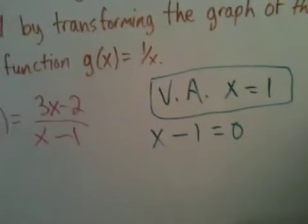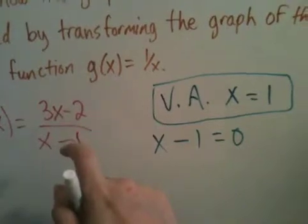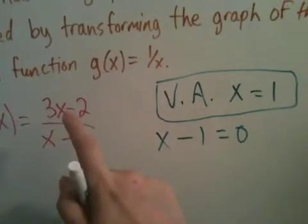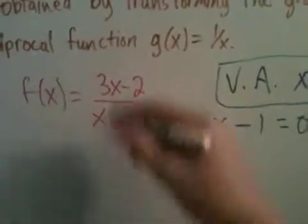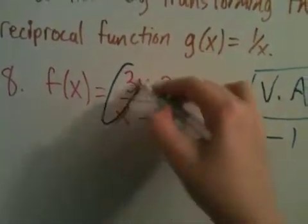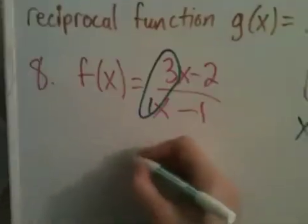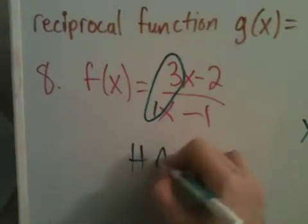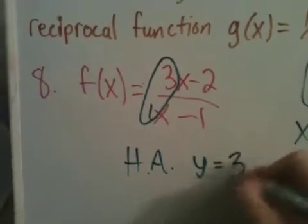My horizontal asymptote has to do with the degree on the top and the bottom of my fraction. On top I have x to the first, on bottom I have x to the first. Since they're the same, my horizontal asymptote happens at y equals the fraction that I get from my leading coefficients. So my horizontal asymptote happens at y = 3/1, which is just 3.